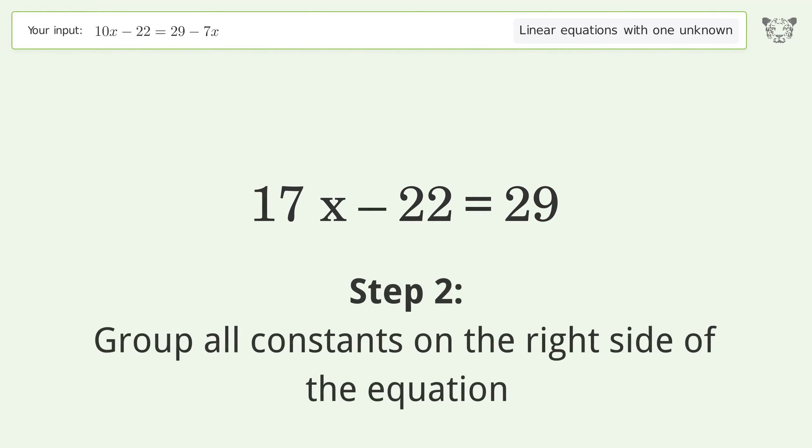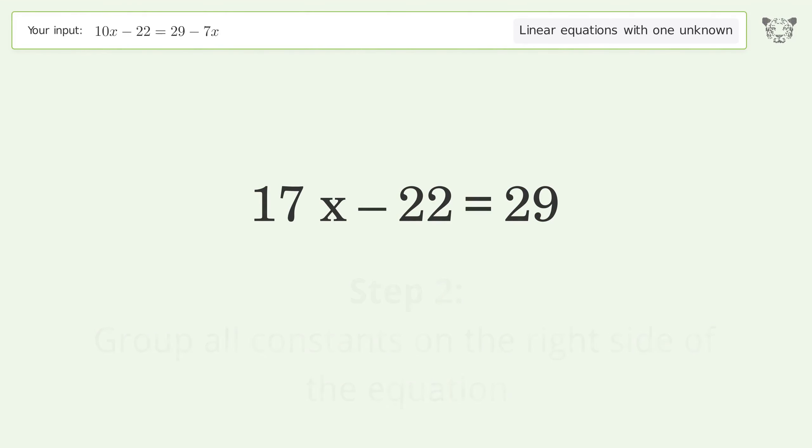Group all constants on the right side of the equation. Add 22 to both sides. Simplify the arithmetic.